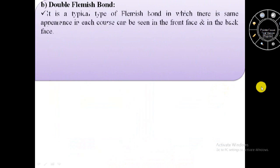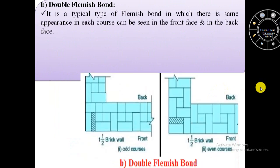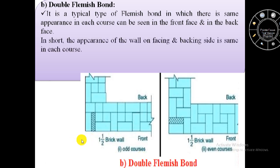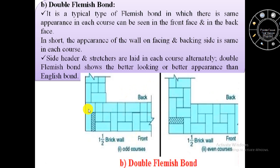Now we will see double Flemish bond. Double Flemish bond is a typical type of Flemish bond in which there is the same appearance in each course on both the front face and back face. In short, the appearance of the wall on facing and backing side is the same in each course. Headers and stretchers are laid in each course alternately. Double Flemish bond shows better appearance than English bond.